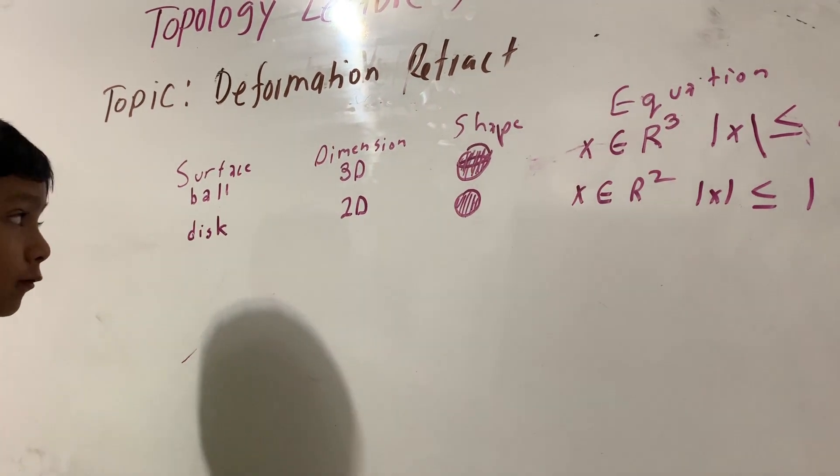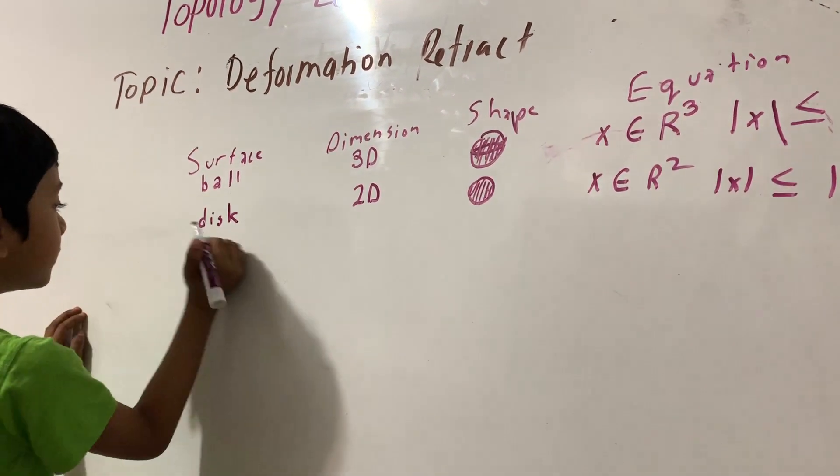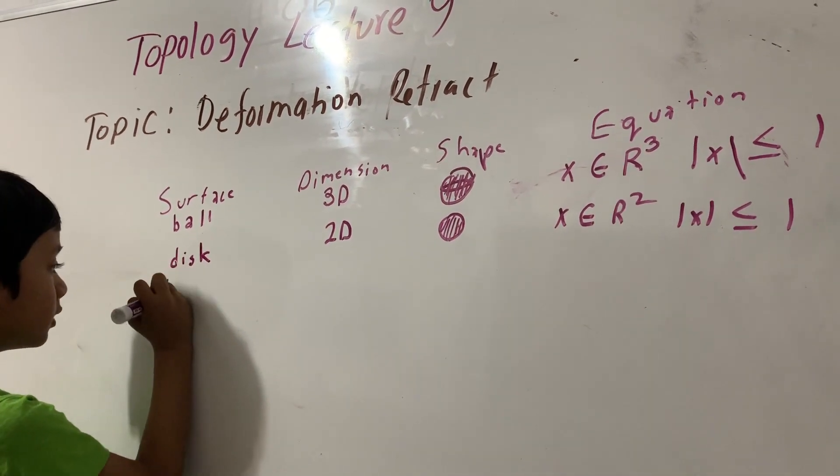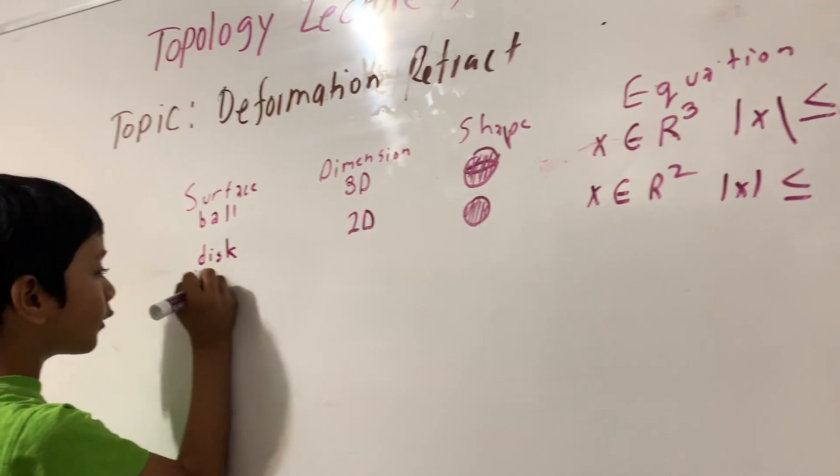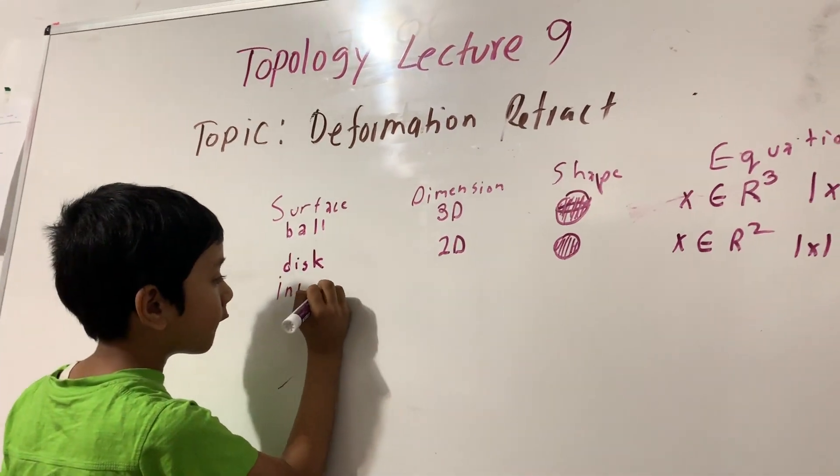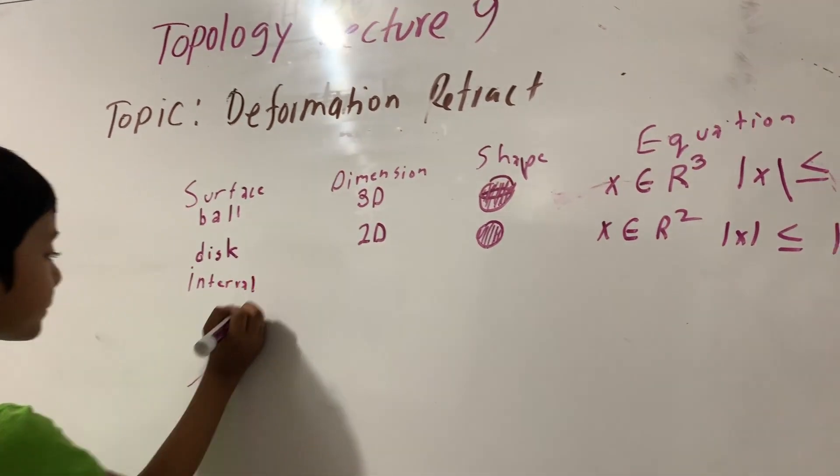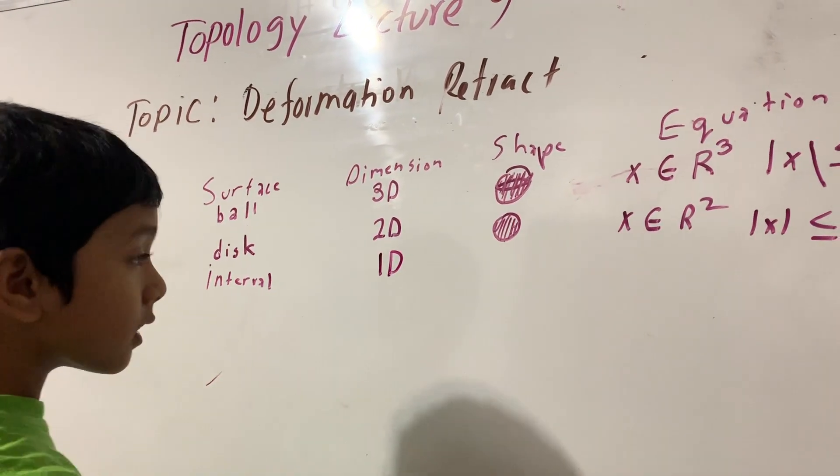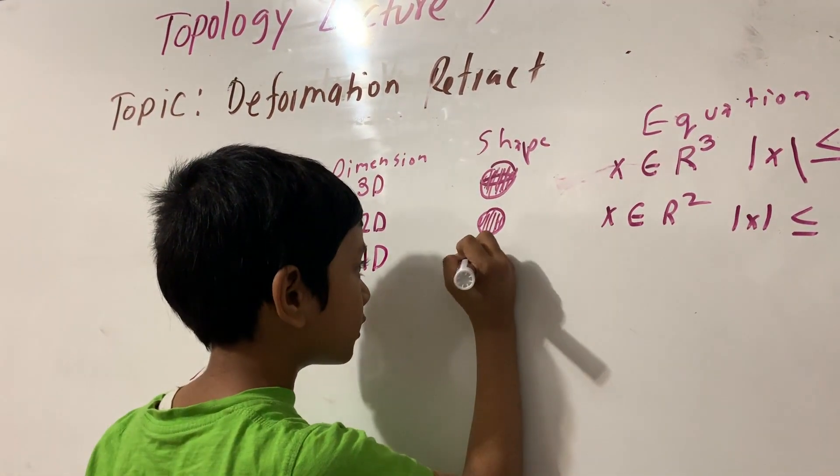Now, what about a line, a line segment, a closed interval? It's one-dimensional, obviously. It looks like this.